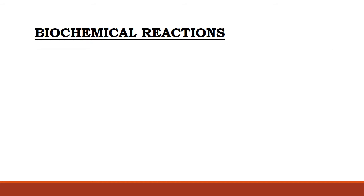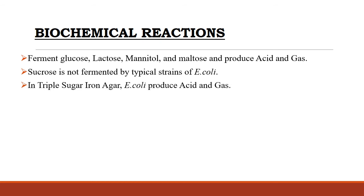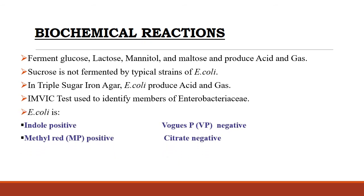Biochemical reactions are very important in the identification of bacterial isolates and different bacterial species. These tests depend on the presence of certain enzymes such as catalase, oxidase, urease, gelatinase, etc., produced by the bacteria. E. coli is a lactose-fermenting bacteria and can also ferment glucose, mannitol, and maltose, producing acid and gas, but does not produce hydrogen sulfide gas. In triple sugar iron agar, E. coli produces acid and gas by fermentation of three types of sugar: lactose, sucrose, and glucose (dextrose). The IMViC test is used to identify members of the family Enterobacteriaceae, and E. coli is a member of this family. On the IMViC test, E. coli is indole positive, methyl red positive, Voges-Proskauer negative, and citrate negative.